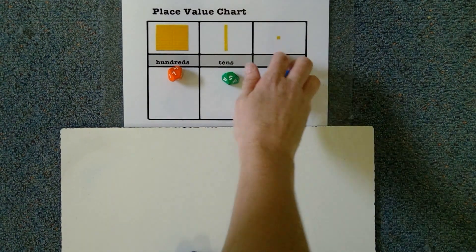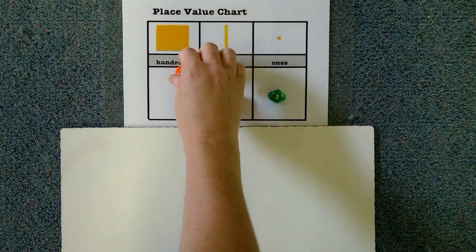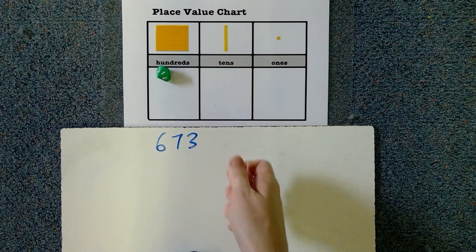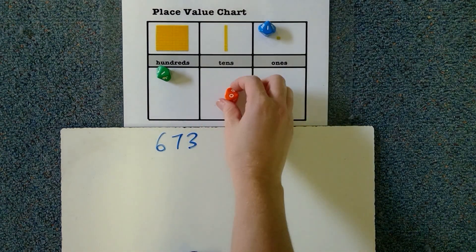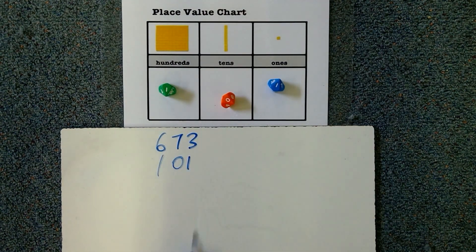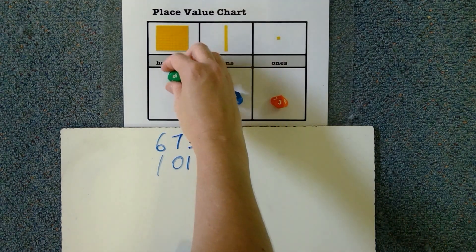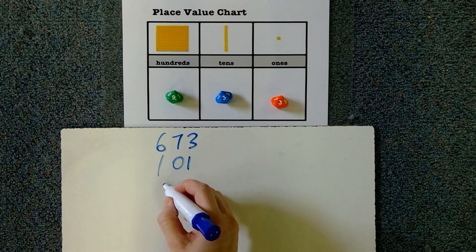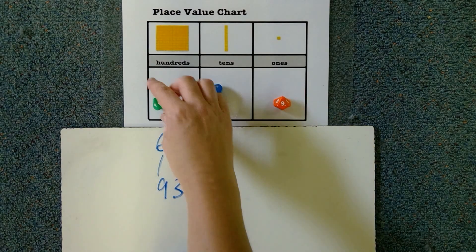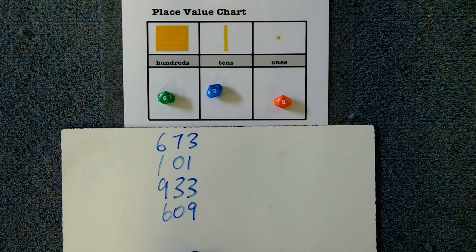Okay. Are you ready for your next one? See if you can keep up. 673. Oh, this will be interesting. Oh, that was a one. Put that back. 101, 611. Your next one. 933 and 609. All right. You've got 30 seconds. Off you go. Put them in order.